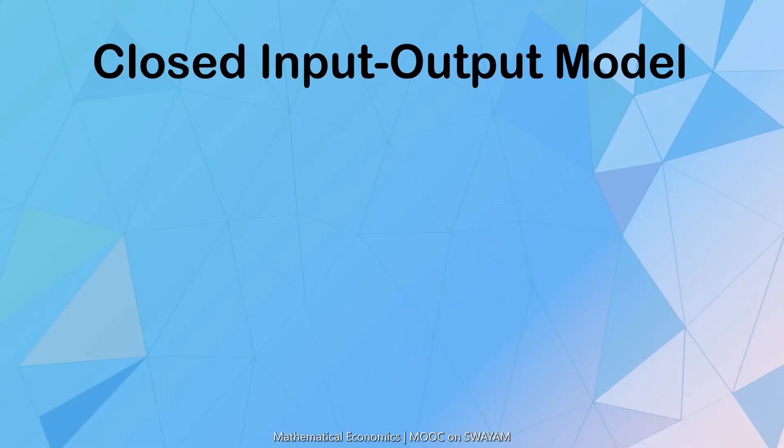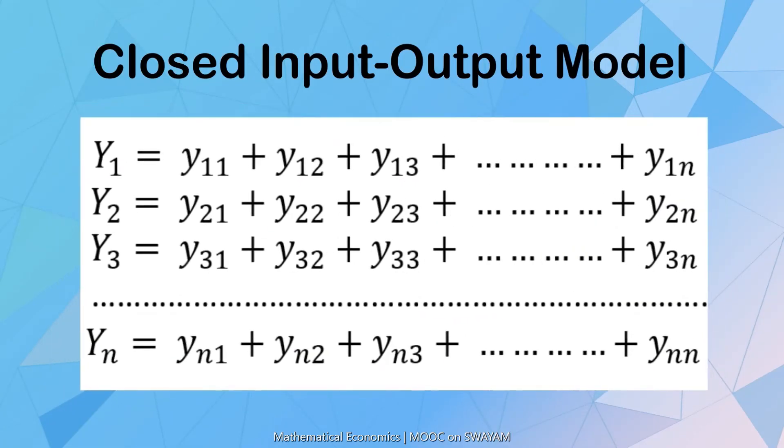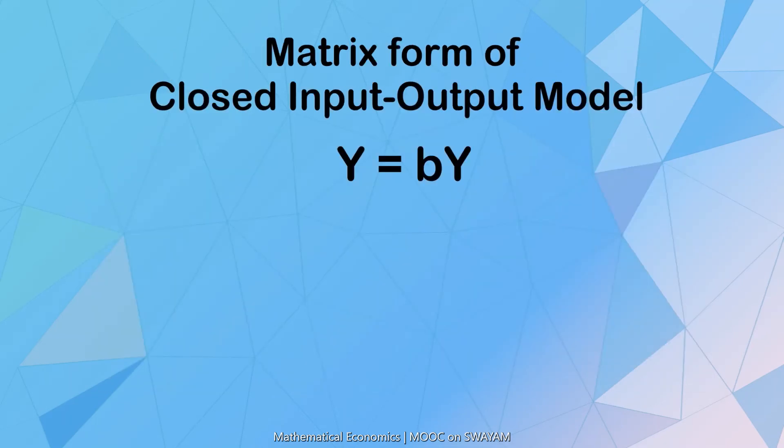If the model is closed, the column of final demand is absent. There exist only intermediate demands. That is, the output of all the industries will be produced only for itself or to be used by the other industries in the economy. And this will be the matrix form of the closed input-output model.